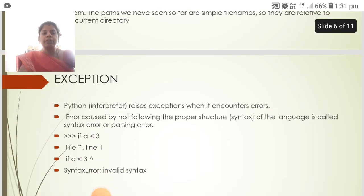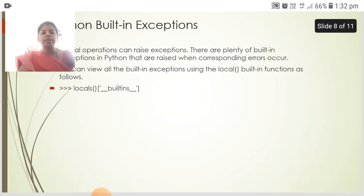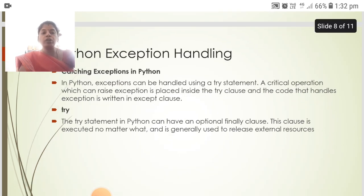Exceptions — the Python interpreter raises exceptions when it encounters errors. Errors caused by not following the proper structure, i.e., syntax of the language, are called syntax errors or parsing errors. There are plenty of built-in exceptions in Python that are raised when a corresponding error occurs. There are two types of Python exception handling: catching and try. Exceptions can be handled using a try statement. A critical operation which can raise an exception is placed inside the try clause, and the code that handles the exception goes in the except clause. The try statement in Python can also have an optional finally clause, which is executed no matter what and is generally used to release external resources.